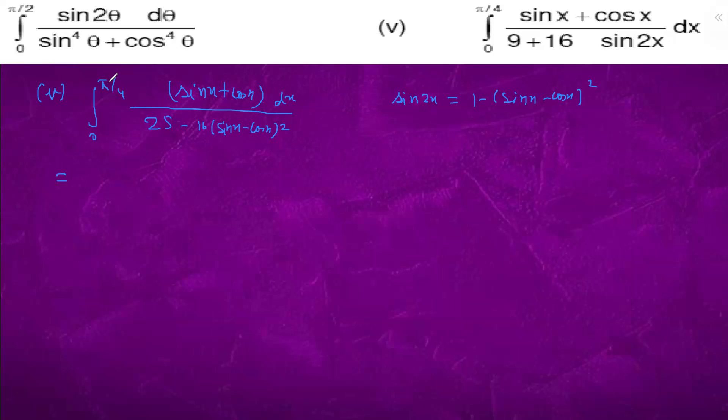So we will not keep the value of theta right now, we will not substitute, we will do that normally. This is t. So this is dt upon, 1 by 16 we took common, it is 25 by 16 minus t square, 1 by 16. So it is 5 by 4 minus t into 5 by 4 plus t.